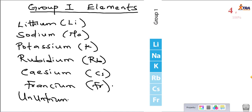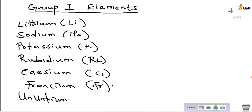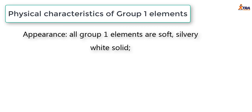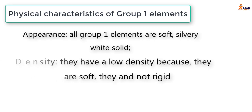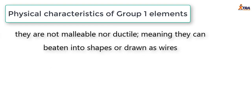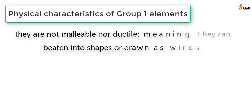For physical characteristics, all group 1 elements are soft, silvery-white solids. They have a silvery appearance and are very soft — you can even cut them with a knife. They have a very low density because they are soft and not rigid. They are not malleable and not ductile, meaning you cannot beat them into shapes or draw them into wires. Those properties are only possible with hard metals.